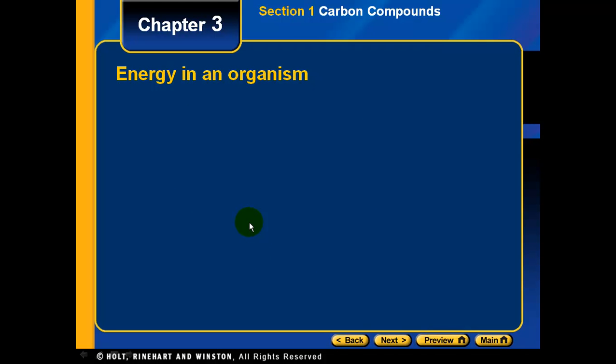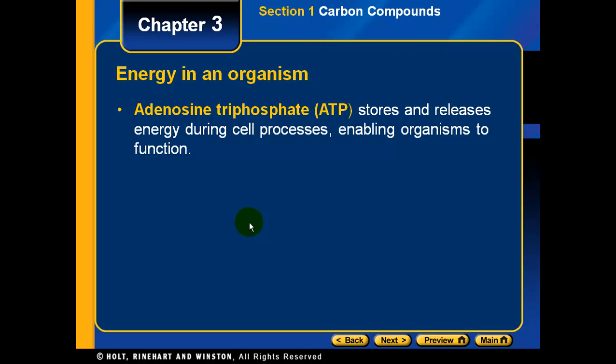The last topic is energy in an organism. The key energy molecule is ATP, which stands for adenosine triphosphate. ATP is found and produced in your cells. It stores energy during cellular processes and releases energy during cellular processes, enabling organisms to function and do work.